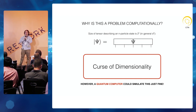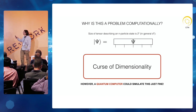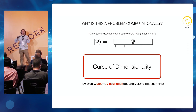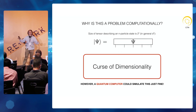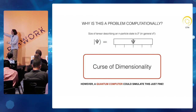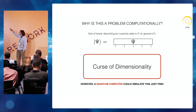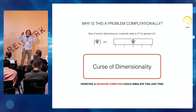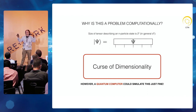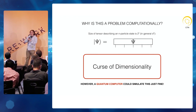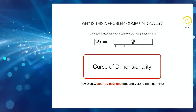The problem computationally with many-body systems is that because of this tensor product structure, the cost of representing a state of N particles is exponential in the number of particles. To represent an N-particle state, you need to work with a tensor with N legs — a multi-dimensional array. The memory cost of that is exponential in the rank of the array. So physicists have been confronting this curse of dimensionality for a while.